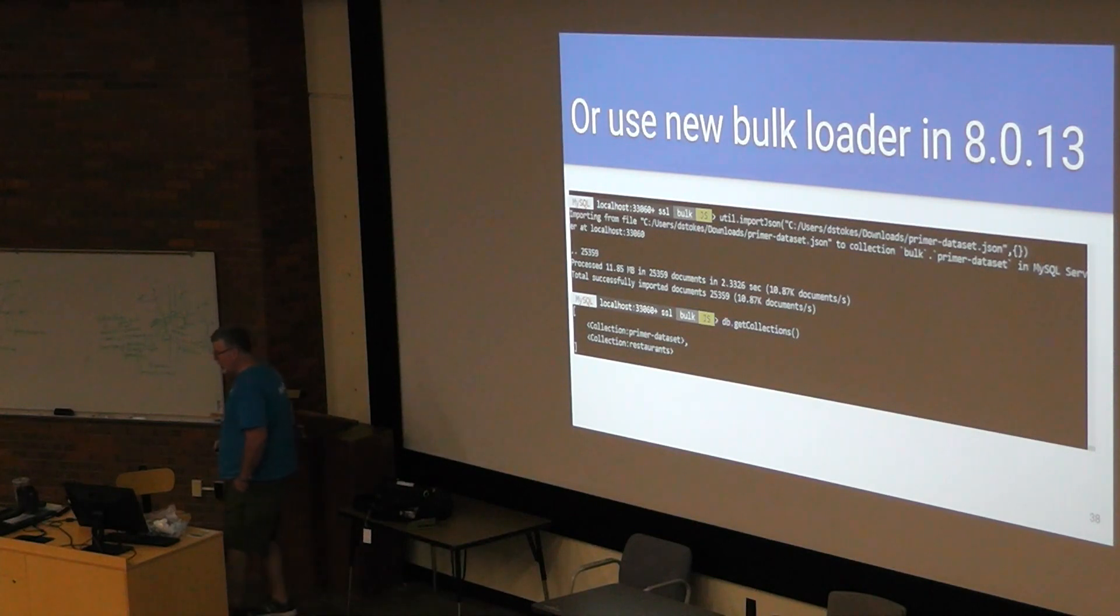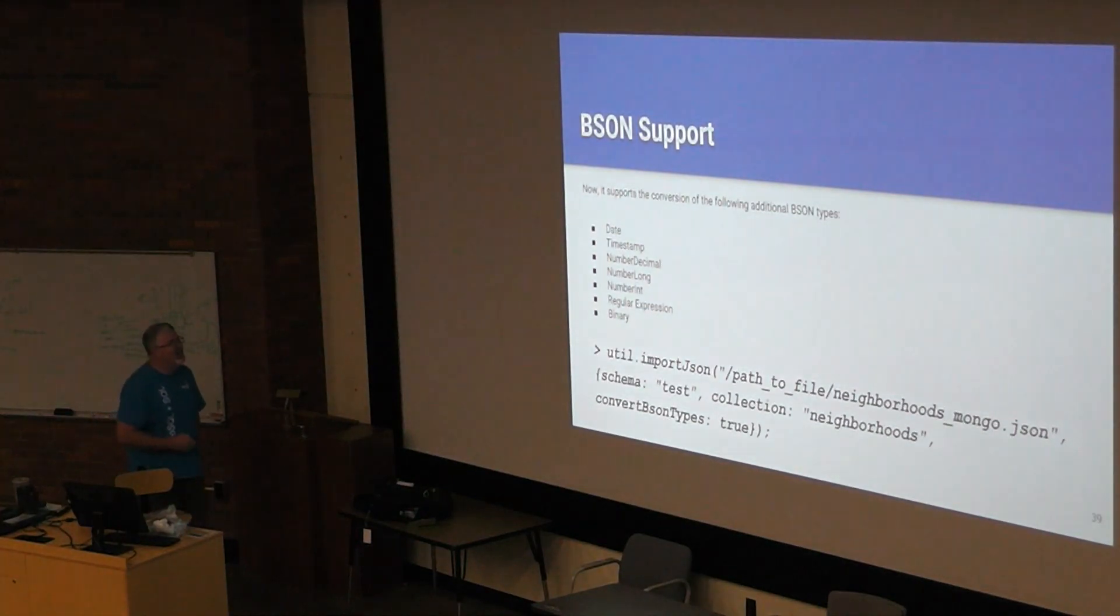Now, what's real funny is 8.017 came out two weeks ago. We now have a parallel bulb loader. It's even faster. So, if you have JSON, CSV, or TSB files, you need to load in rather quickly. This utility will do that for you. Also, now we support all the BSON stuff that Mongo's been using. So, if you've got their dates or time stamps or their binary files, it's no problem to pull that all in.